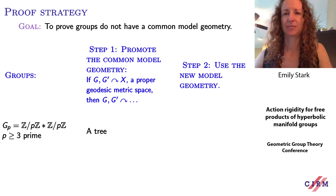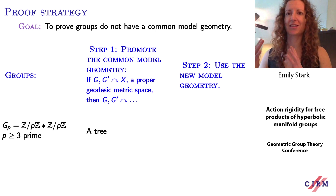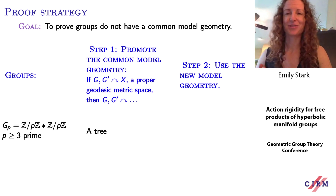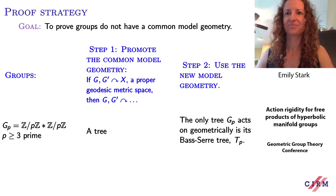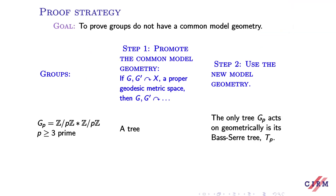For these virtually free groups studied by Mosher-Sageev-Whyte — the free product of finite cyclic groups — Mosher-Sageev-Whyte proved that if two virtually free groups act geometrically on the same proper geodesic metric space, then in fact those groups act geometrically on the same bounded valence simplicial tree. That's the natural model geometry for these groups. This is helpful because the only tree that G_p can act on geometrically is the Bass-Serre tree associated to this free product splitting — the p-valence tree. So G_p and G_q cannot act on the same tree geometrically, and therefore they can't act on the same space.